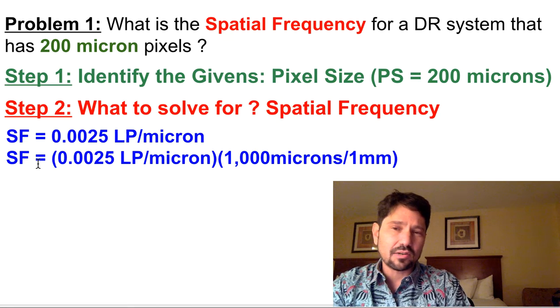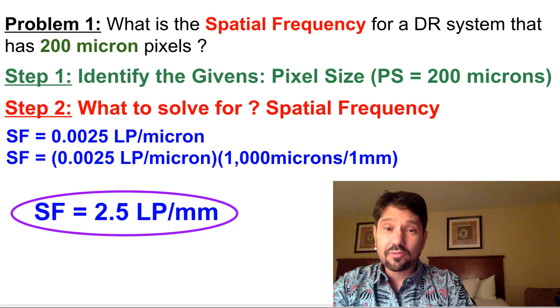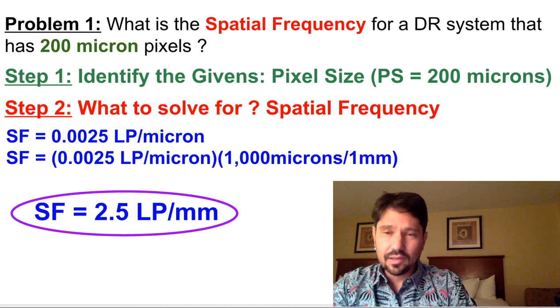So we'll multiply 0.0025 times 1,000, and that'll give us 2.5 line pairs per millimeter. And, of course, circle your answer so your teacher can find it.